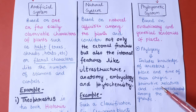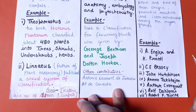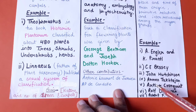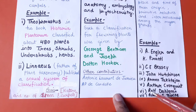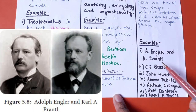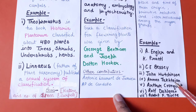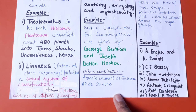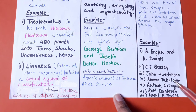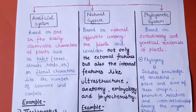Examples of the phylogenetic system of classification include classifications given by Engler and Prantl, Bessey, Hutchinson, Takhtajan, Cronquist, Dahlgren, and Thorne. The classifications given by these workers fall under the category of phylogenetic system of classification.